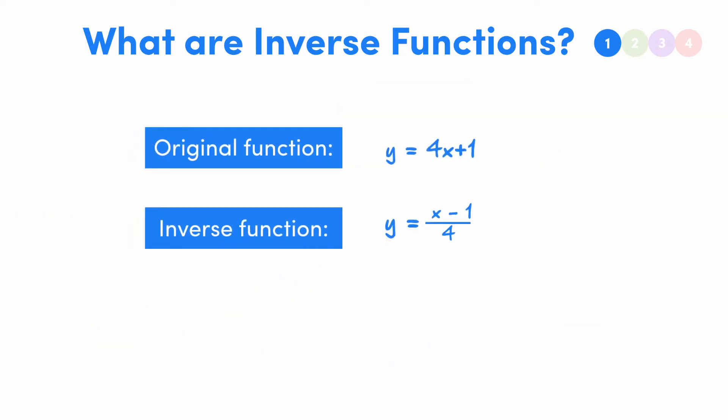If we make x the subject in this equation we get x equal to 4y plus 1, which you might notice is exactly the same as our original function, but we've swapped the x and the y. That's really important, keep that in mind.